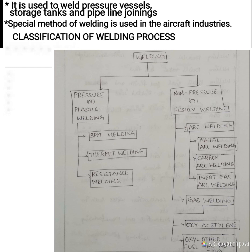Classification of welding process: The welding process is mainly divided into two types. First, pressure or plastic welding. Second, non-pressure or fusion welding. Pressure welding is again divided into spot welding, thermite welding, and resistance welding. Non-pressure welding is divided into arc welding and gas welding. Arc welding is further classified into metal arc welding, carbon arc welding, and inert gas arc welding. Gas welding is divided into oxy-acetylene gas welding and oxy other fuel gas welding.